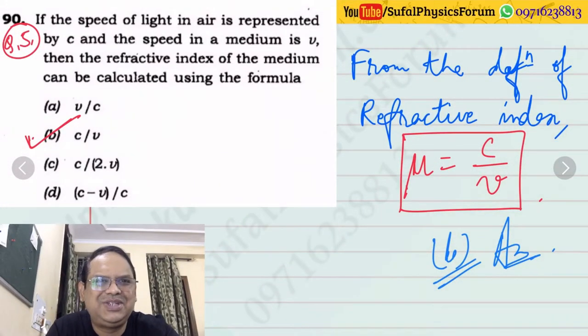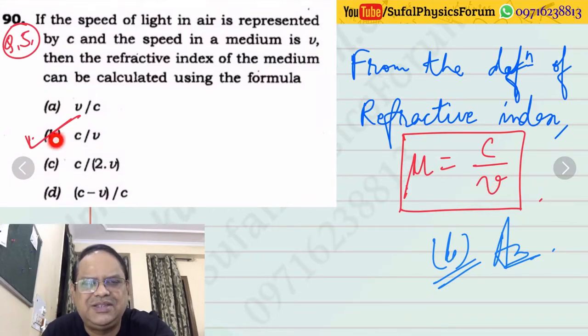Question number 5: If the speed of light in air is represented by c and the speed in the medium is v, then the refractive index of the medium can be calculated using the formula. We need to recall that the refractive index is defined as mu is equal to c upon v, where mu is refractive index of the medium with respect to vacuum, and v is the speed of light in the medium. Option number B is clear cut.